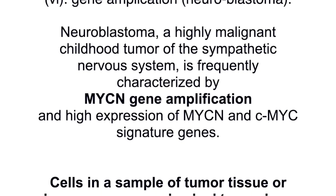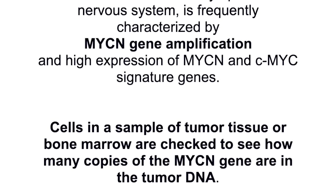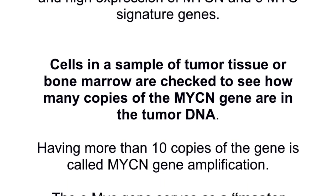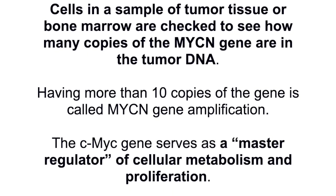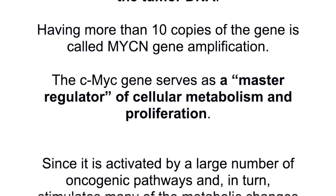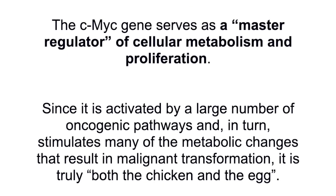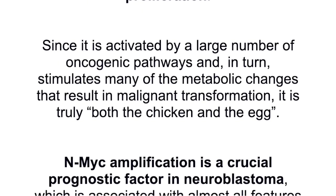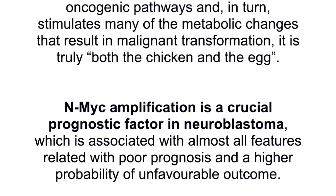Neuroblastoma, a highly malignant childhood tumor of the sympathetic nervous system, is frequently characterized by MYCN gene amplification and high expression of MYCN and CMYC. Having more than 10 copies of the MYCN gene is called MYCN gene amplification. The CMYC gene serves as a master regulator of cellular metabolism and proliferation — since it is activated by a large number of oncogenic pathways and in turn stimulates many of the metabolic changes that result in malignant transformation, it is truly both the chicken and the egg. NMYC amplification is a crucial prognostic factor in neuroblastoma, associated with poor prognosis and a higher probability of unfavorable outcome.